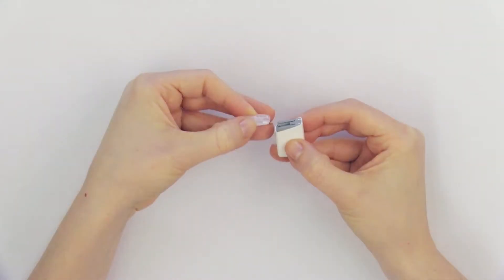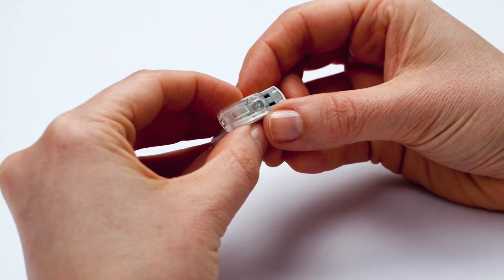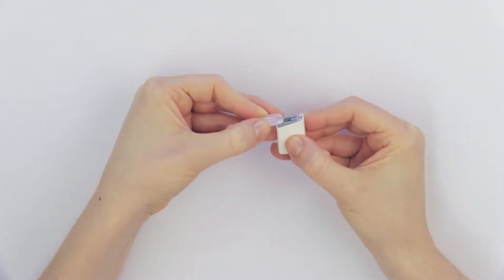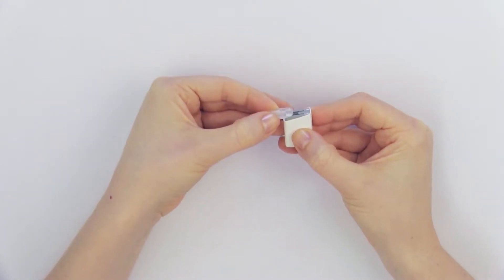To replace the PowerCell cover, hold the PowerCell with one hand and align the cover with the PowerCell rails. Slide the cover onto the PowerCell until you feel it click into place.